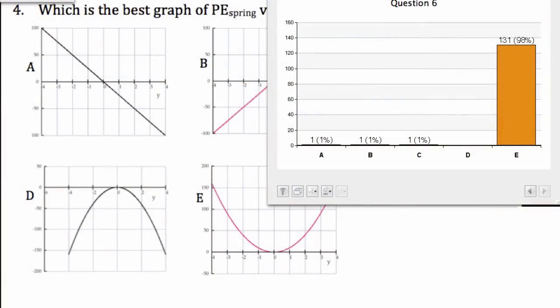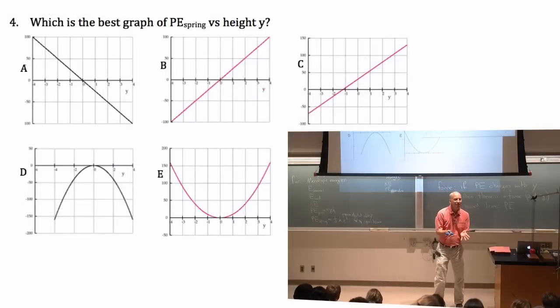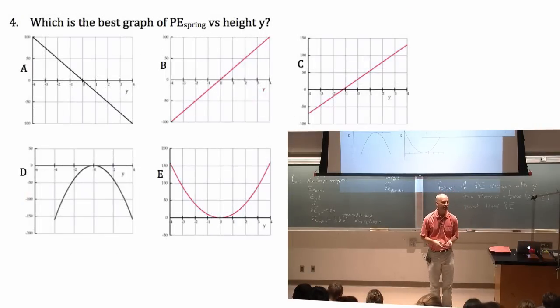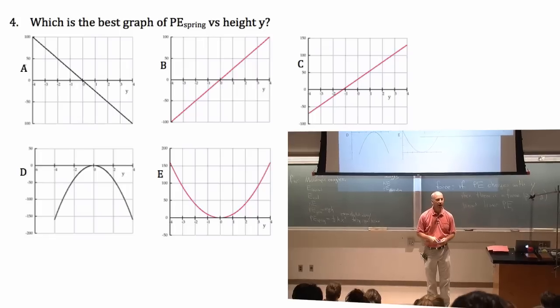Alright, well somebody was listening. There's a minimum and it's quadratic. It depends on the square of the distance, so it isn't two straight lines away from the minimum, it's a parabola.